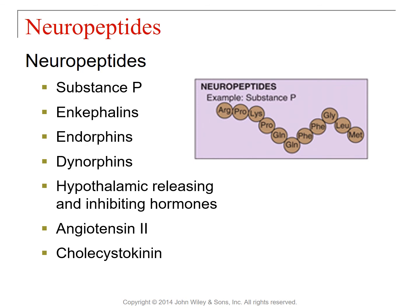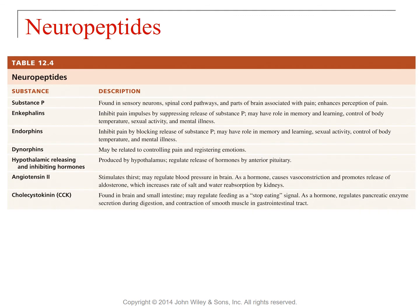Angiotensin 2 is a hormone that causes the body to retain water through a variety of mechanisms — you'll learn those in A&P 2. Cholecystokinin is also a neuropeptide and you'll learn more about that when discussing the digestive system.